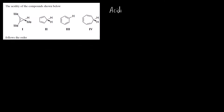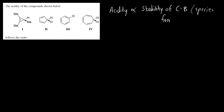What does acidity depend on? Acidity basically depends on — it is directly proportional to — the stability of the conjugate base. The conjugate base is the species formed after loss of an H⁺ ion.